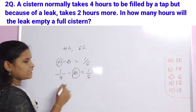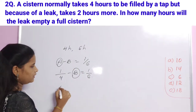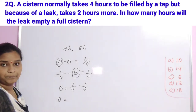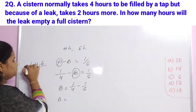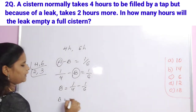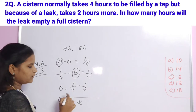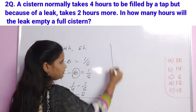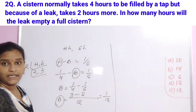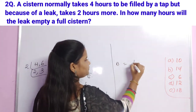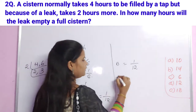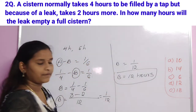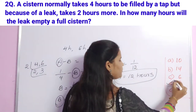To find the leak rate B: B equals 1/4 minus 1/6. LCM of 4 and 6 is 12. So 3 minus 2 over 12 equals 1/12. Therefore B empties 1/12th per hour. Total time to empty the cistern is 12 hours. Option D is the correct answer.